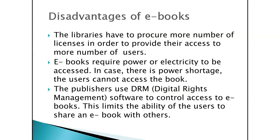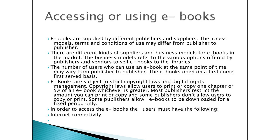Disadvantages of e-books: libraries have to procure more licenses to provide access to more users; e-books require power or electricity to be accessed, so users cannot access them during power shortages; publishers use DRM — Digital Rights Management software — to control access to e-books, which limits users' ability to share e-books; and access models, terms and conditions of use may differ from publisher to publisher.